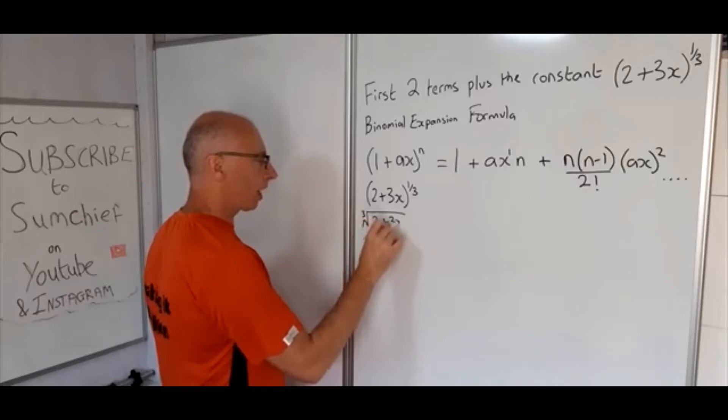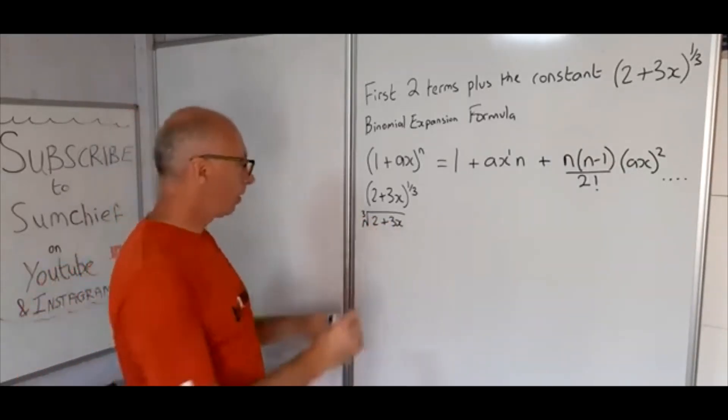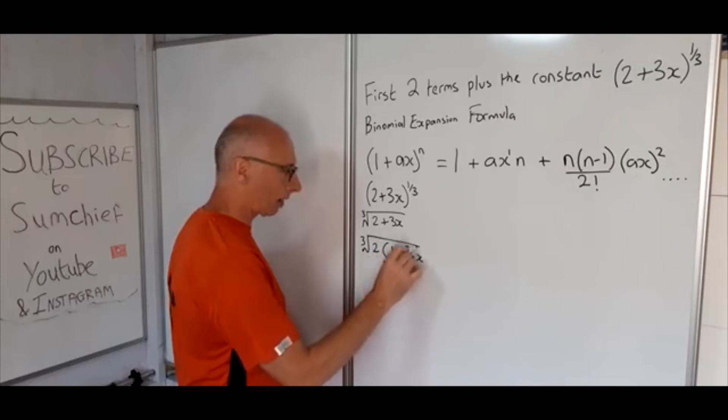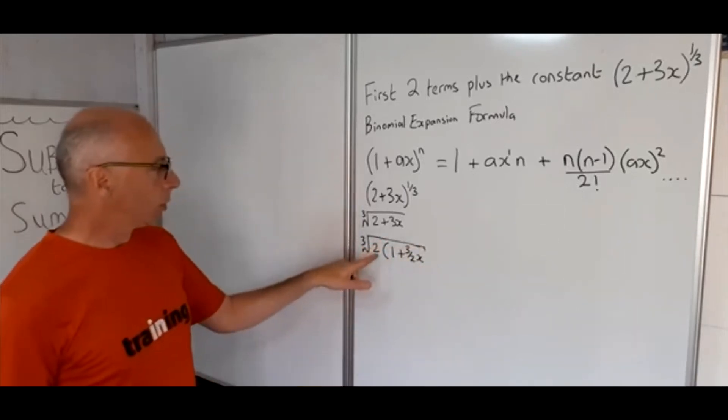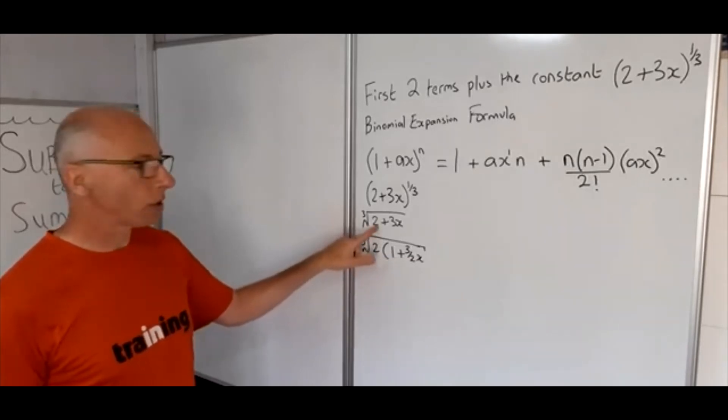So (2 + 3x)^(1/3) is equivalent to taking the cube root and then taking out this 2 here, so 2 times (1 + 3/2 x)^(1/3). Multiply that by 2 you're back to the 3x, multiply that by 2 you're back to the 2, so these are equivalent values.